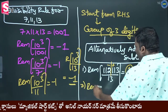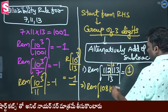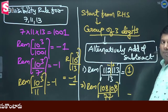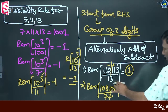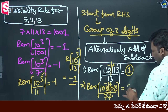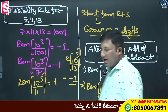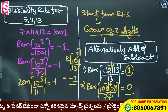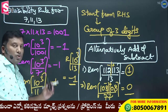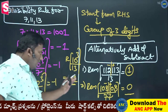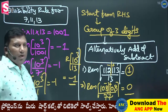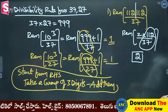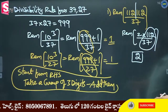So 113 minus 118 equals minus 5. And 108 minus 108 is 0. Is this logic clear? Divisibility rule for 37 and 27, divisibility rule for 7, 11, 13: important numbers. 10 cube divided by 1001 gives minus 1.